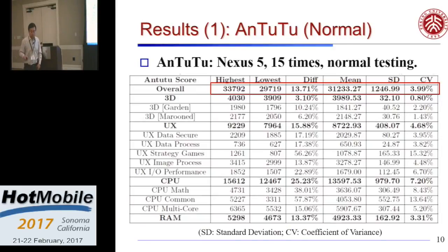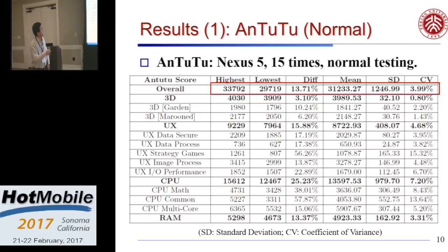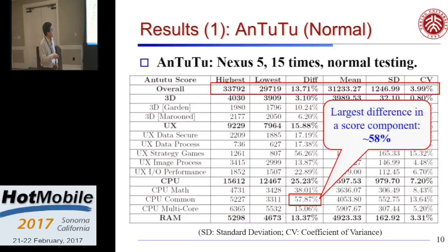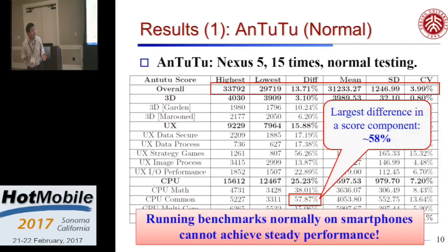We first run Antutu in normal environment — just run it on the phone without changing anything. Running it 15 times, the difference between highest and lowest scores is about 30%. The standard deviation is about 4% of the mean — also high. If you look at some of the components, they are even worse. The CPU common computation difference across 15 runs is close to 60%, which tells us that just running benchmarks doesn't tell you the correct story. All those posts comparing phones depend on how they run the benchmarks and which number they use.